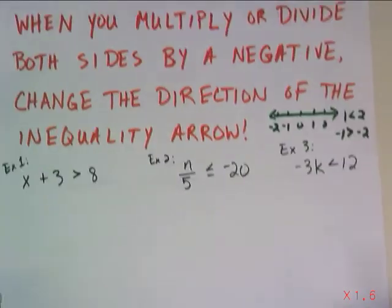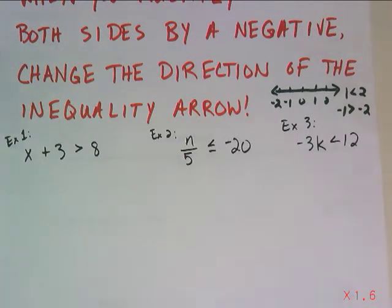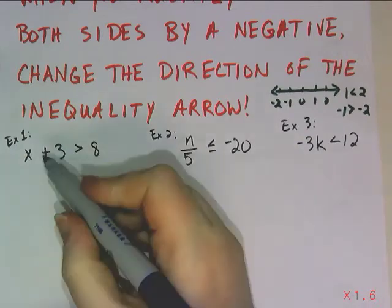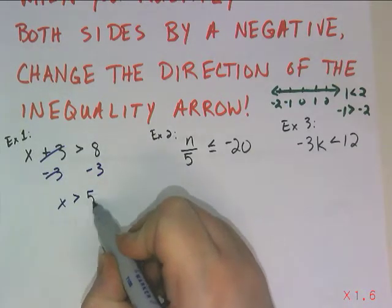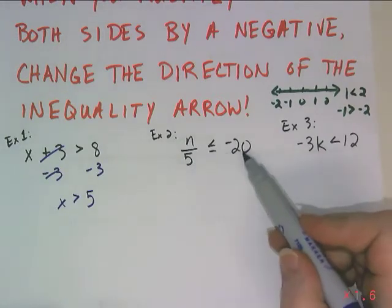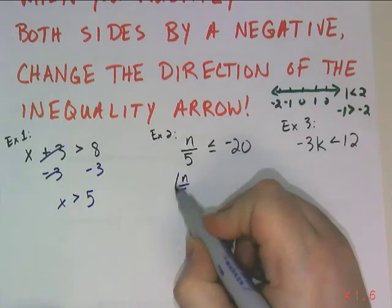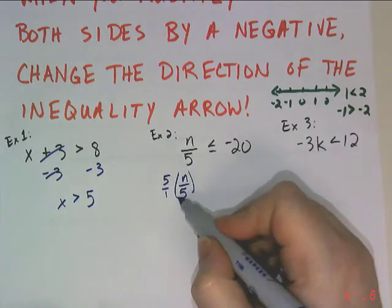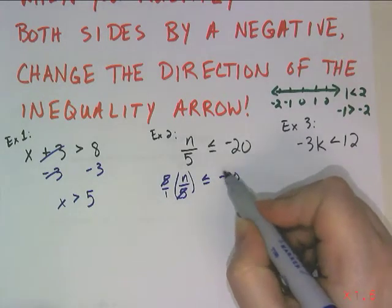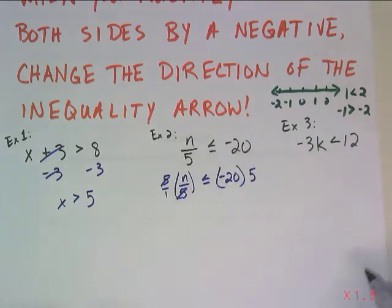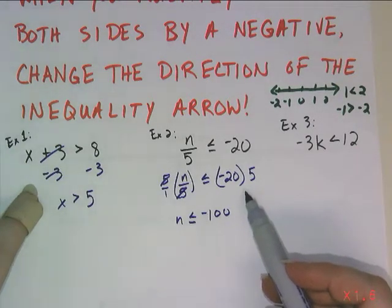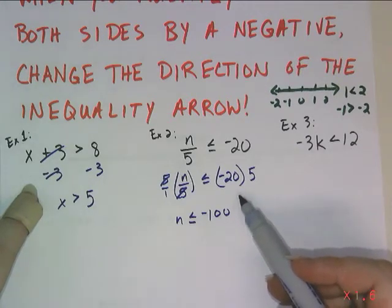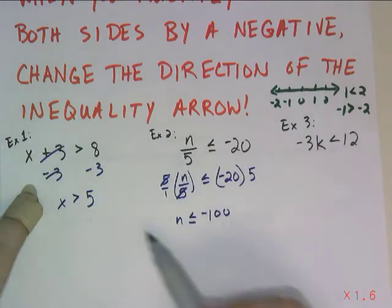Let's do practice problems. With x + 3 > 8, I subtract 3 from both sides — those cancel — giving x > 5. When n/5 ≤ -20, I multiply both sides by 5, and negative 20 times 5 is negative 100, so n ≤ -100. In neither problem did I multiply or divide by a negative, so I didn't have to change the inequality sign.